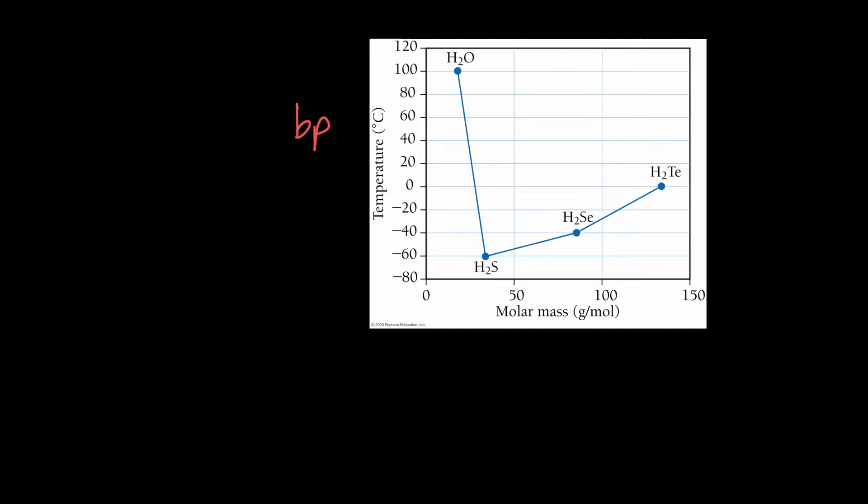Well, we're looking at group six. Group six of the periodic table has oxygen, sulfur, selenium, tellurium. And if you look at this graph, you can see it looks like a straight line.